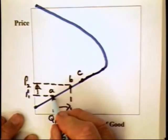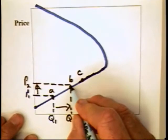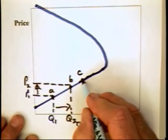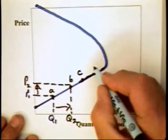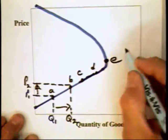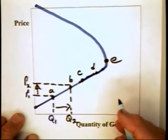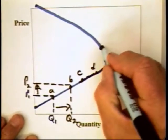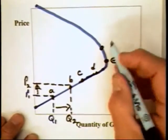So if producers are at A, they would gladly move to B. And if at B, they would gladly move to C. They might gladly move to D and even to point E. And the question is, would they move to a point like F?